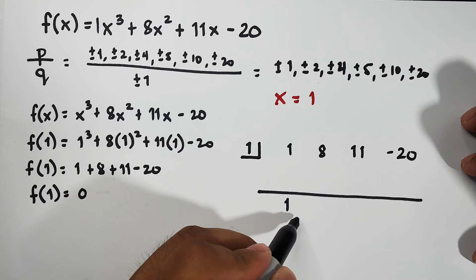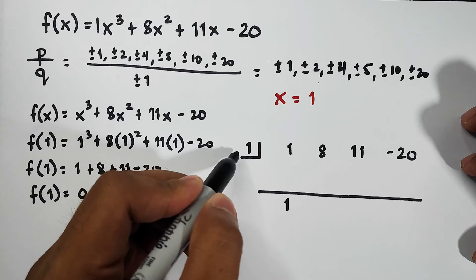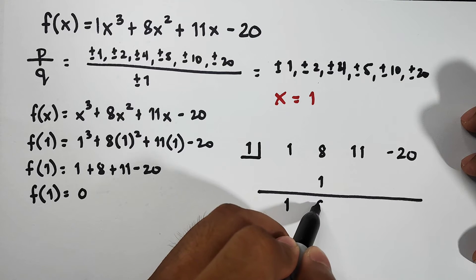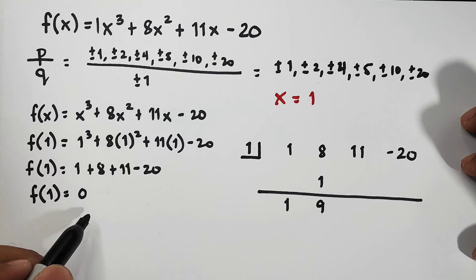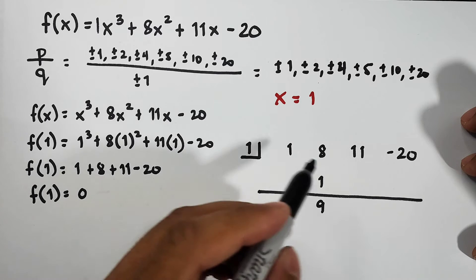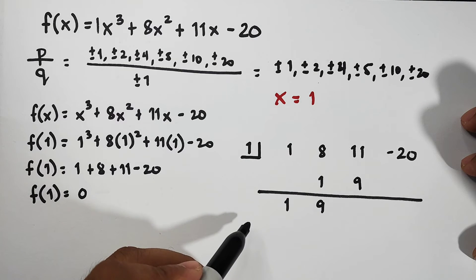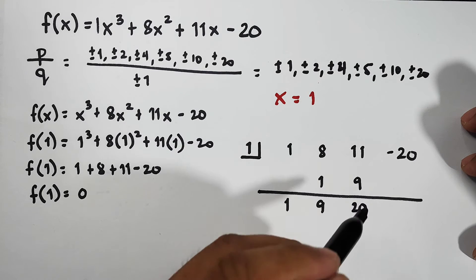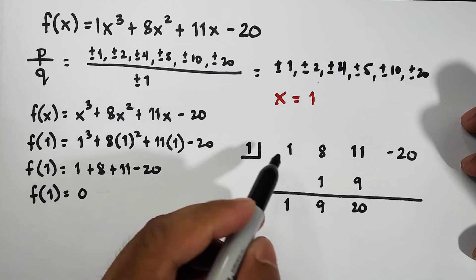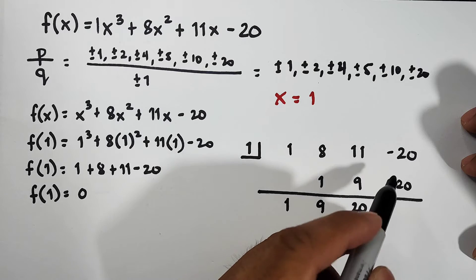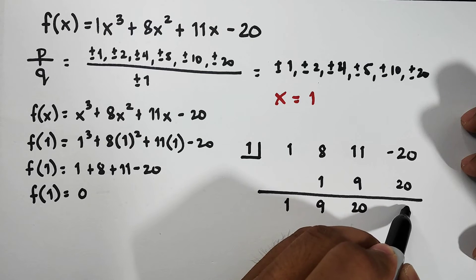Bring down 1. 1 times 1 is 1, add them: 8 + 1 is 9. So what we have here is 9 times 1, that is 9. And 11 + 9 is 20. 20 times 1 equals 20. So as you can see, when we add this to the number, the answer is 0.